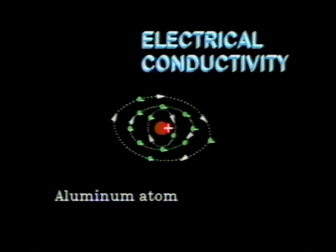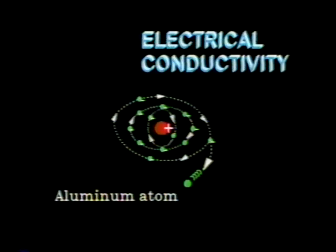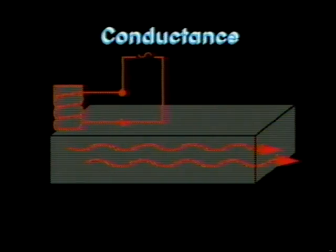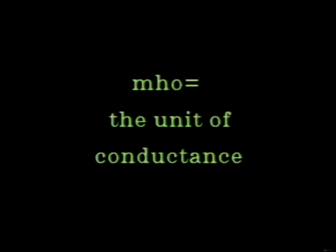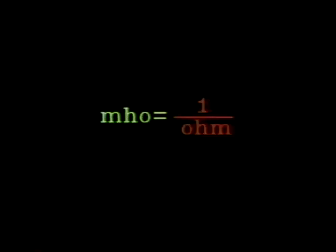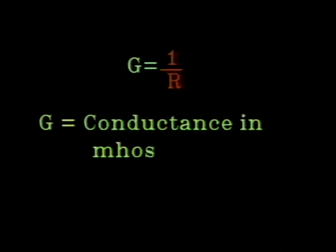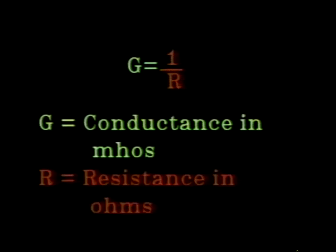In electron theory, the atom consists of a positive nucleus surrounded by orbiting negative electrons. Materials that allow these electrons to be easily moved out of orbit around the nucleus are classified as conductors. In conductors, electrons are moved by applying an outside electrical force. The ease with which the electrons move through the conductor is called its conductance. A unit of conductance is the mho. The mho is the reciprocal of the ohm, represented by the equation g equals one over r, where g is the conductance in mhos and r is the resistance in ohms.